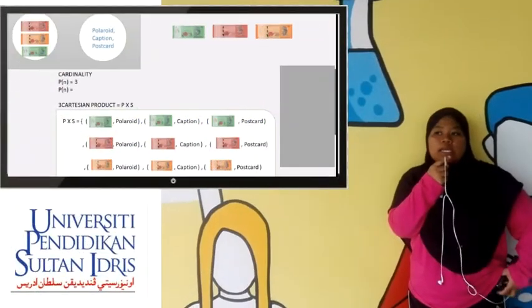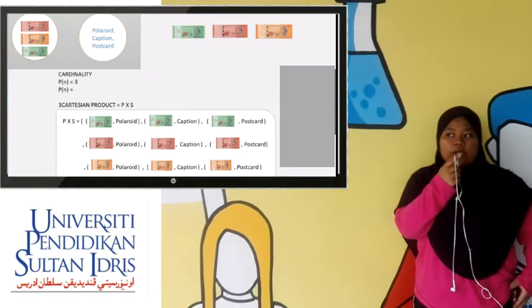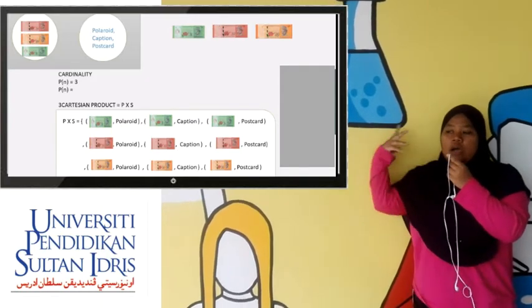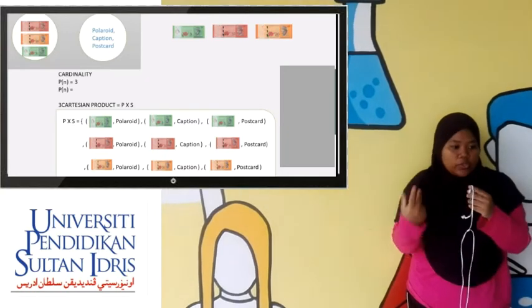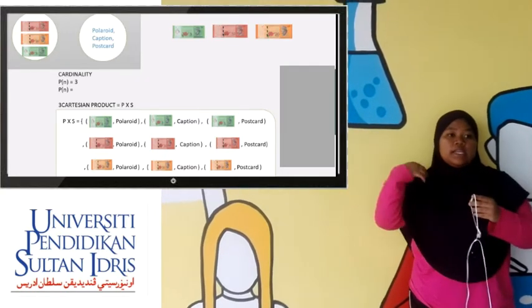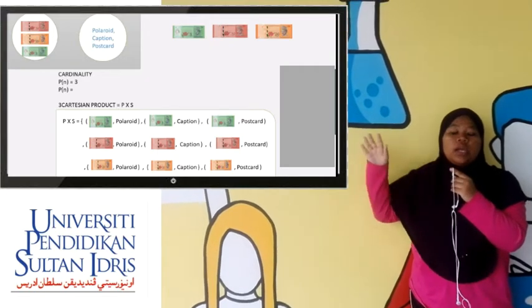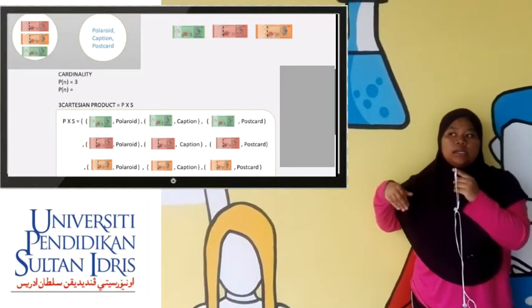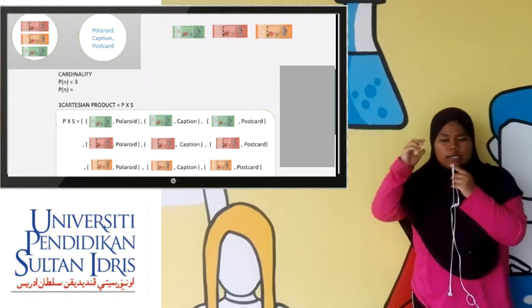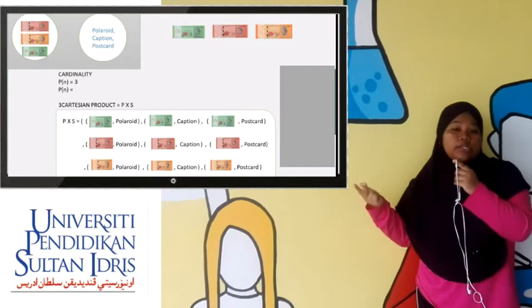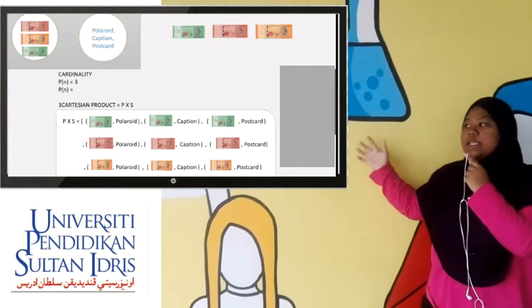The second topic for the discrete structure that relates to the Boft photo printing is set theory. In set theory, I can conclude that we can relate three subtopics, which is cardinality, Cartesian product, and also disjoint set.